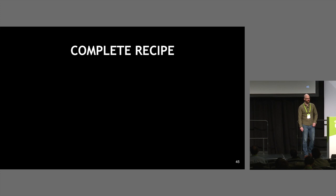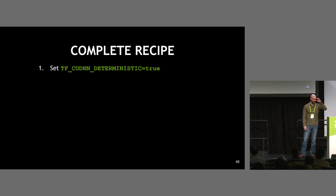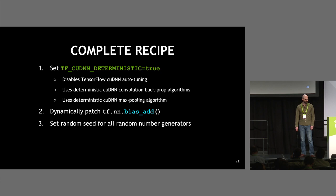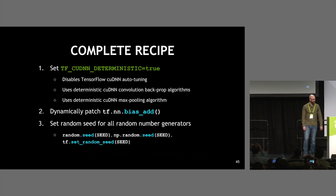To summarize the complete recipe for training TensorFlow deterministically on a GPU: set the TF_CUDNN_DETERMINISTIC variable, which handles convolution backprop, max pooling, and disables auto-tuning. Dynamically patch bias add. Set all the random seeds — that's the important one. And if using more than two GPUs with Horovod, disable TensorFlow Fusion.